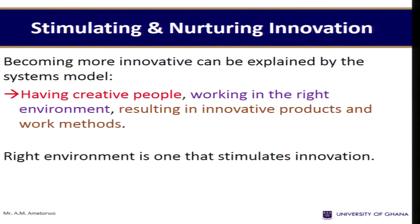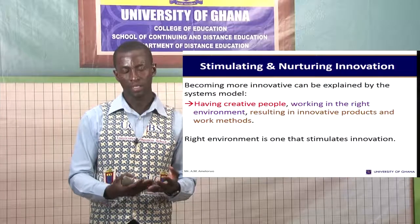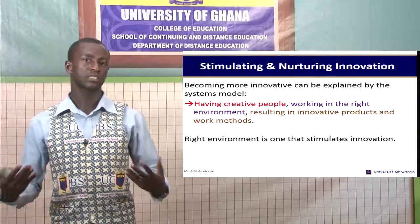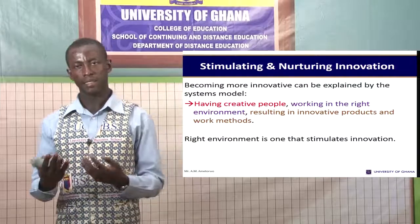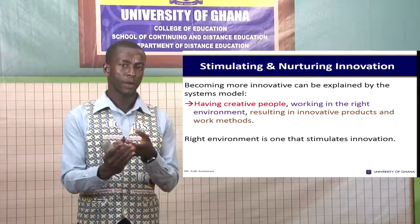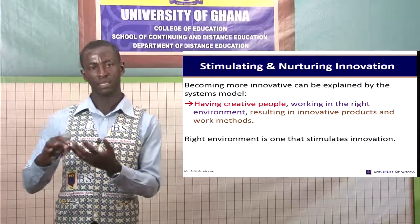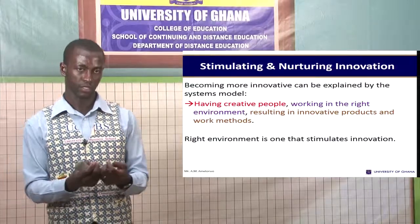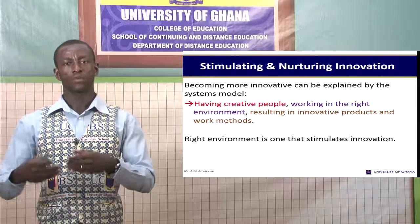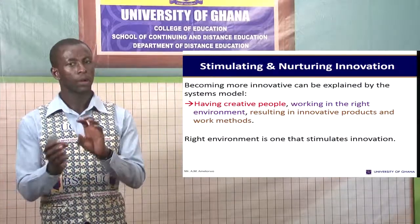To stimulate and nurture innovation, let's look at the systems model and how it can be applied in the organization. For a system, we talk about the inputs, the process, and then the output. We also say that a system involves how parts are interrelated and interdependent. In this particular model, we are looking at the inputs, the process, and the output as a framework for how to nurture innovation.